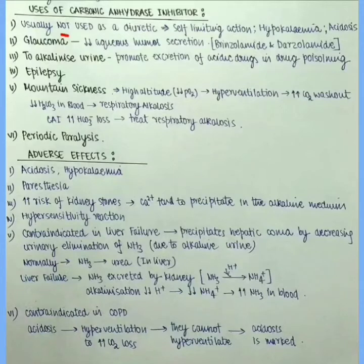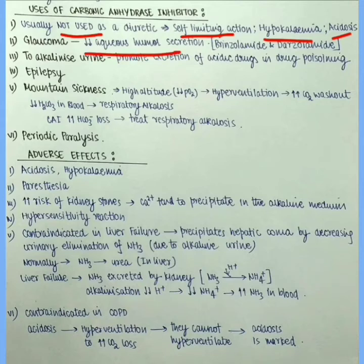Uses of carbonic anhydrase inhibitor. It is usually not used as diuretic because it has a self-limiting action, produces marked hypokalemia and produces metabolic acidosis. It is used in glaucoma because it decreases aqueous humor formation and secretion. Mainly drinzolamide and darzolamide are used as topical eye drops.